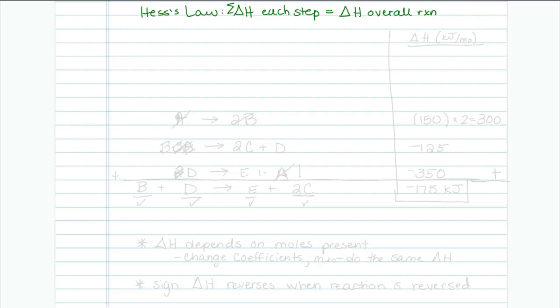Give myself a little bit of room, and I know that I am going to add up each of these steps. When I add up each of these steps, I should get my overall reaction, which is B plus D yielding E plus 2C. I am going to draw a little line over here because everything to the right of this line is going to be my delta H information, which is kilojoules per mole.